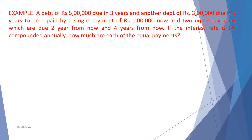Next example: A debt of Rs. 5,00,000 due in 3 years and another debt of Rs. 3,00,000 due in 6 years are to be repaid by a single payment of Rs. 1,00,000 now and two equal payments due 2 years from now and 4 years from now. If the interest rate is 8% compounded annually, how much are each of the equal payments?